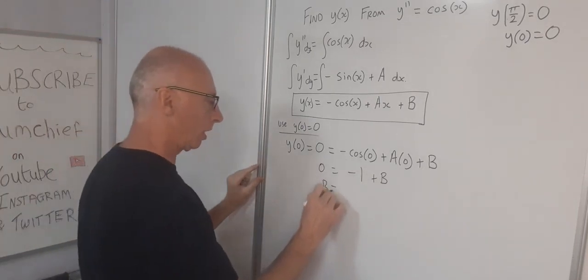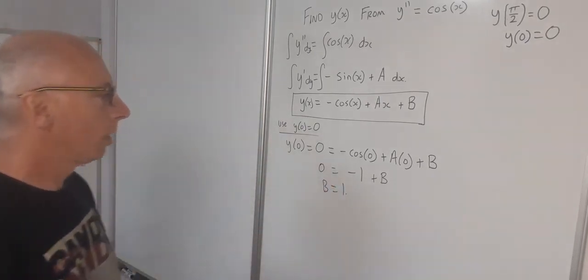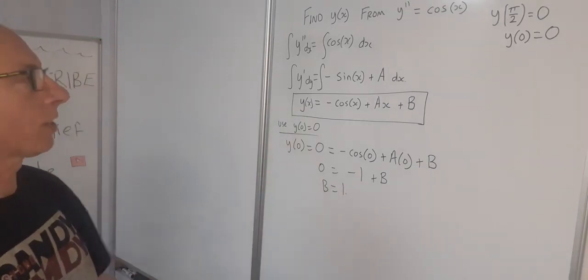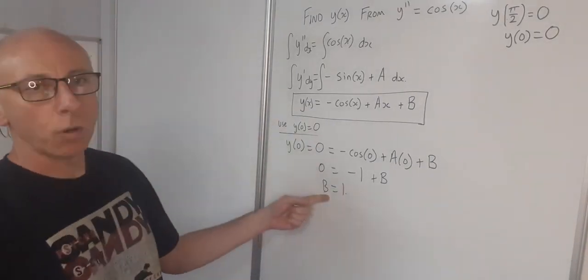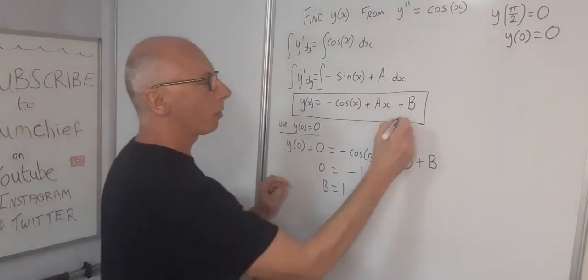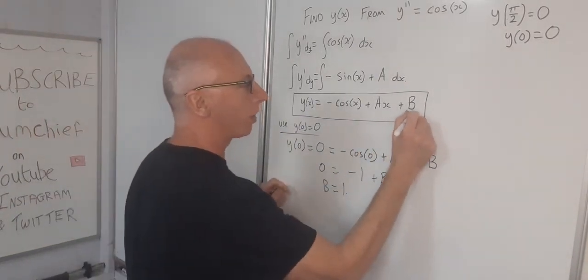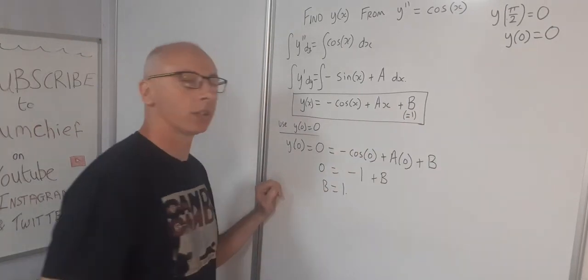So therefore now we can solve for b, so basically b equals 1. Therefore b equals 1. So minus 1 plus 1, that's going to give us 0. So we've got one of our constants here, this one equals 1.